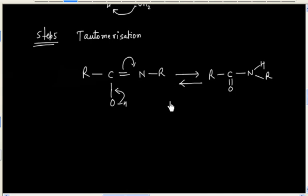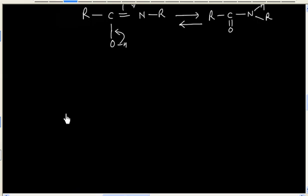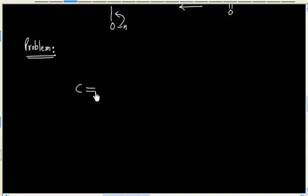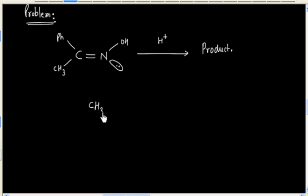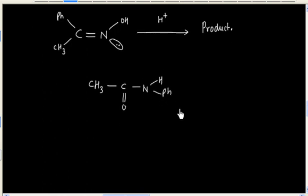So this is the mechanism for Beckman rearrangement. Now let us try this problem. So this is a Beckman rearrangement. What will be the product? So it seems two products are possible. We can have this product or we can have this product.